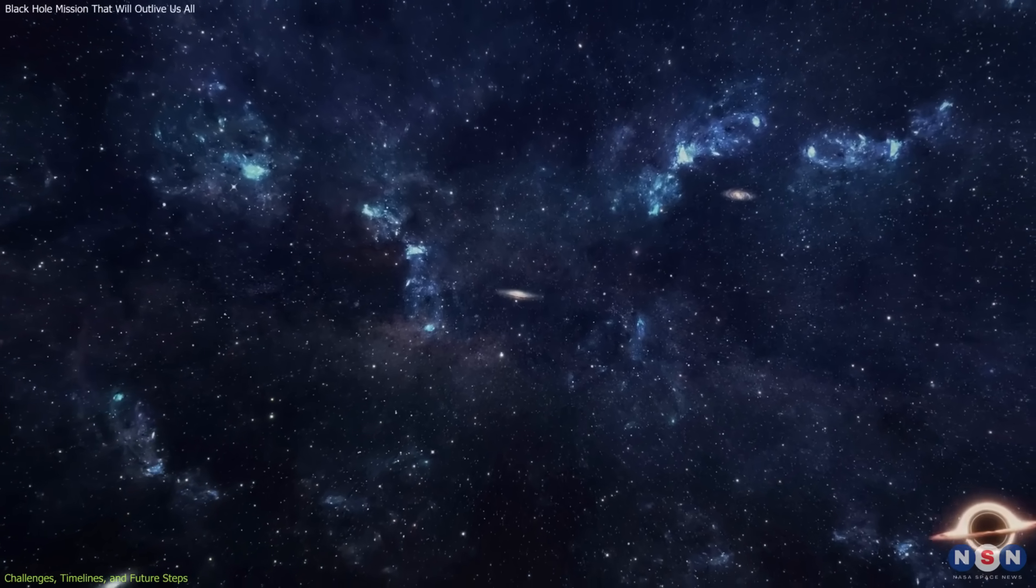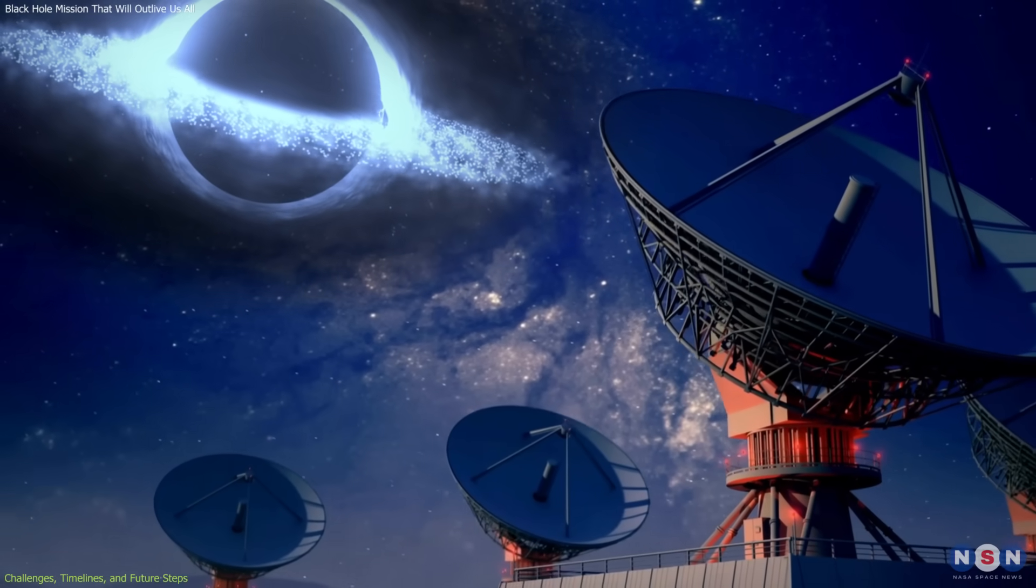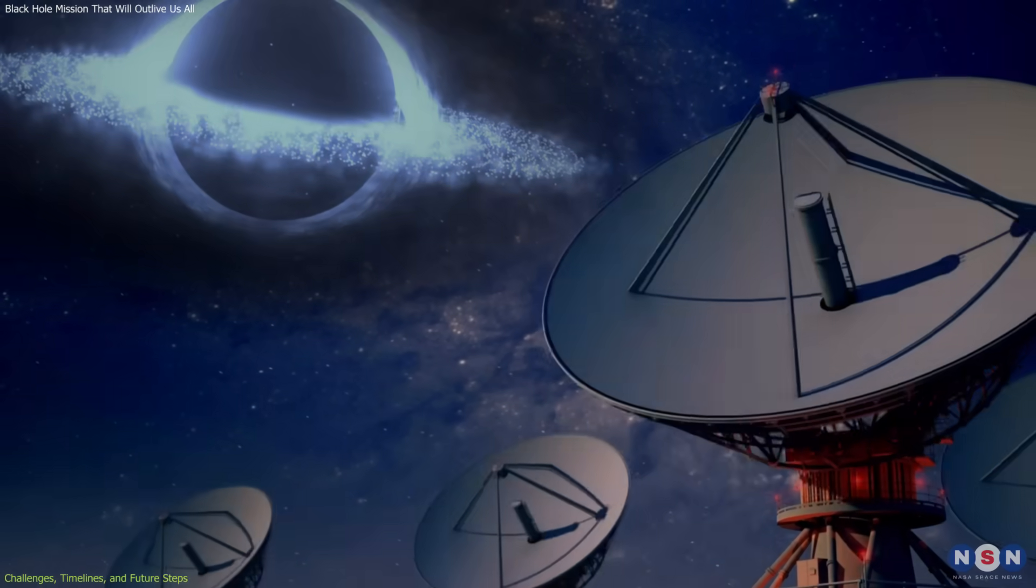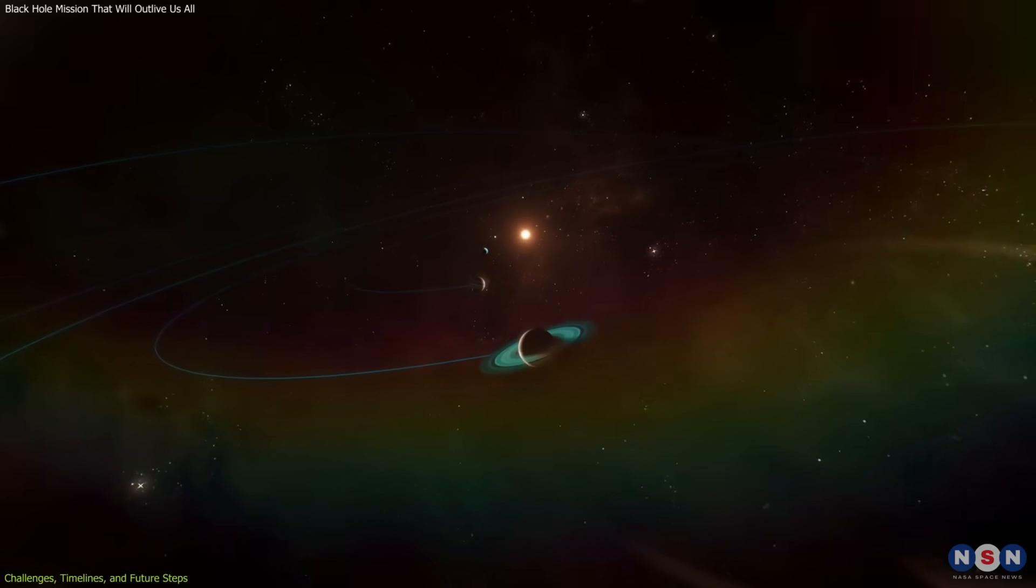A realistic path forward might include black hole detection: identify a suitable target through next generation surveys. Prototype missions: test nanocraft on shorter journeys, such as to the outer solar system.